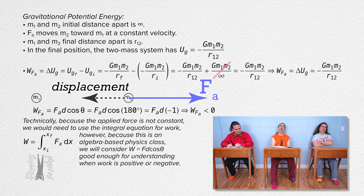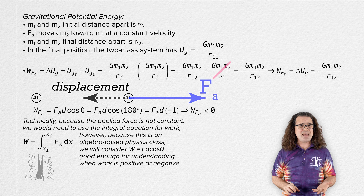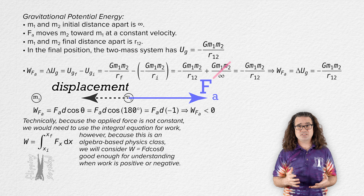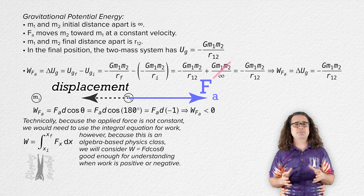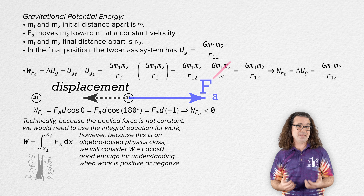Student: You said we were learning about electric potential energy — this is all about gravitational potential energy, and it feels like review. Teacher: Right. I went through all this stuff involving mass and gravitational potential energy specifically because it is a review. All of this is a bit abstract, so connecting it to mass and gravitational potential energy should help you understand what we are about to go through involving charge and electric potential energy.